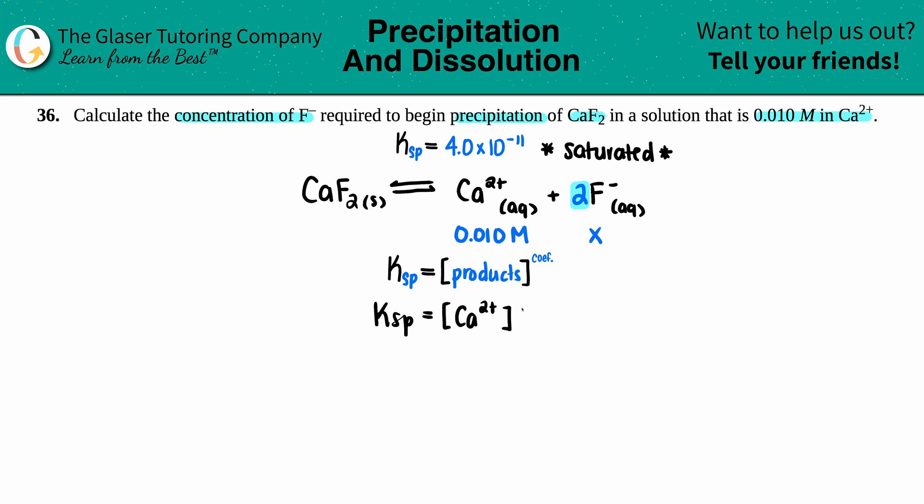times the concentration of F⁻ taken to those coefficients. There was a two here, so I do have to take the fluoride ion and square it. No value for the K in front—that means that there was a one. You could raise it to the first, but you don't have to.